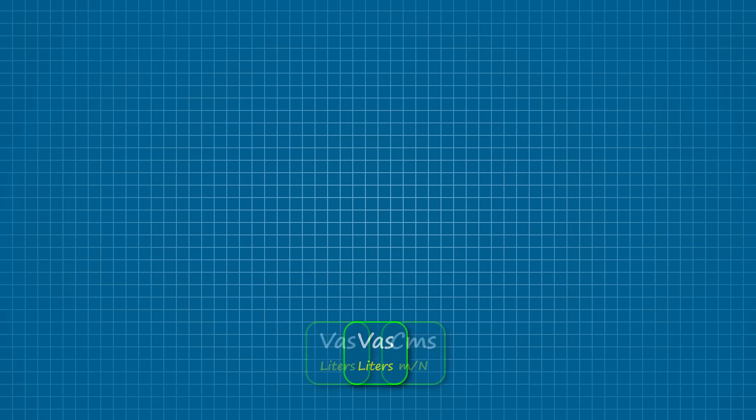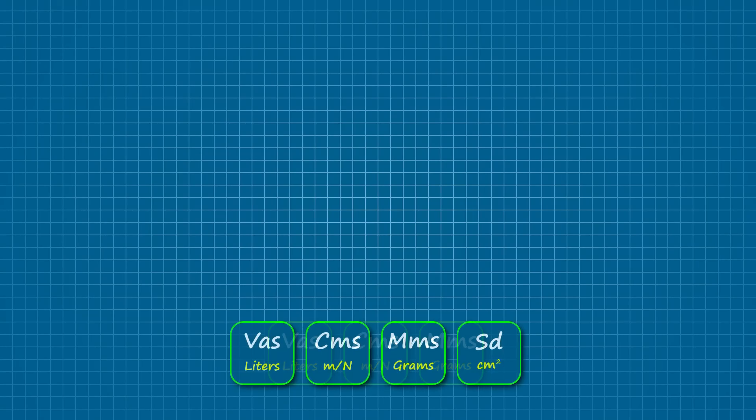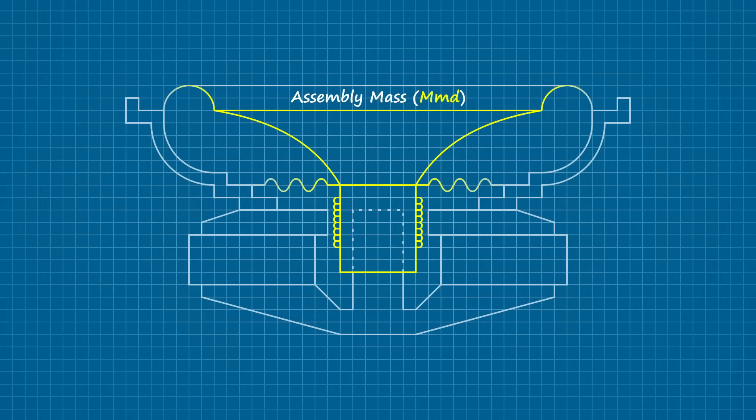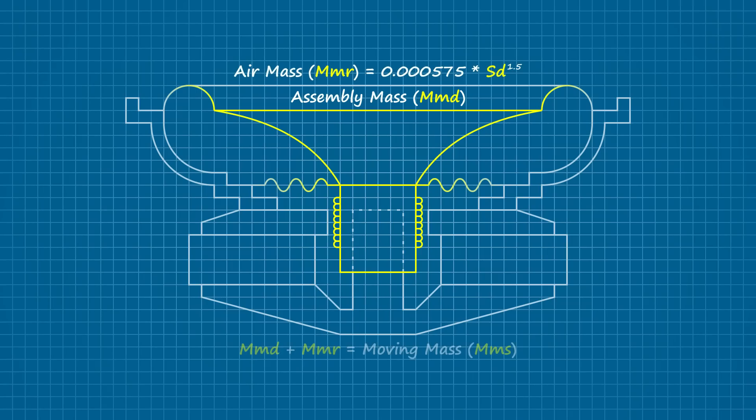We need at least two data points to establish the driver's physical properties, and these can be any two of the following: the equivalent air compliance, the suspension compliance, the moving mass, or the piston area. Personally, I'd choose whichever ones are the easiest to confirm — that would be the piston area, which you can figure out with a tape measure, and the moving mass, especially if you have a recon kit laying around. Just remember that only half of the spider and half the surround factors into the assembly mass, and you can figure out the air mass with this formula. Combine the air mass and the assembly mass, and you have the moving mass.